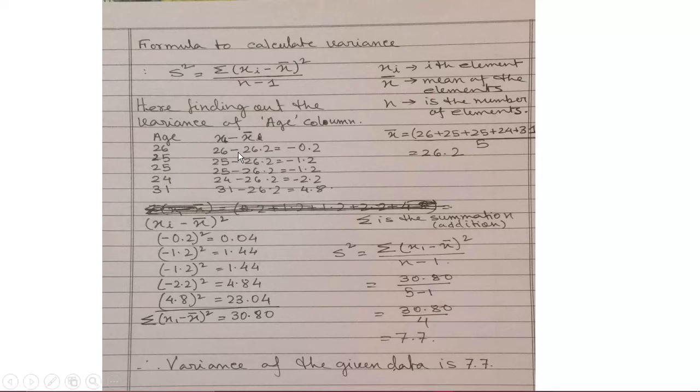Now, the thing is that from each data I have taken, subtracted this, each xi data from this particular ith element, sorry, from the mean. That means everywhere it is 26.2. You can find 26 minus, 25 minus and they are giving me the results out here. Now, what we have to do? Xi minus x mean whole square.